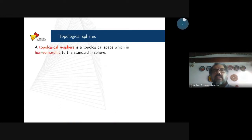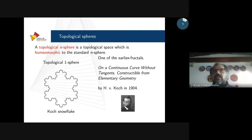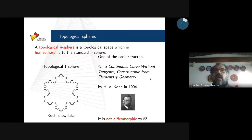A topological n-sphere is a topological space which is homeomorphic to the standard n-sphere. For instance, this is a topological 1-sphere known as the Koch snowflake, one of the earliest fractals, constructed by Koch in his article on a continuous curve without tangents, constructible from elementary geometry. It is not diffeomorphic to S1 because this curve is not differentiable — it doesn't have any tangent at any point.